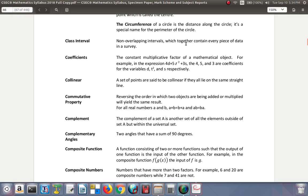Class interval: non-overlapping intervals which together contain every piece of data in a survey. In grouped distribution in statistics, you study class intervals. Coefficients: the constant multiplicating factor of a mathematical object. For example, in 4d + 5t² + 3s, the numbers 4, 5, and 3 are coefficients of the variables. The coefficient is the number that multiplies the variable.